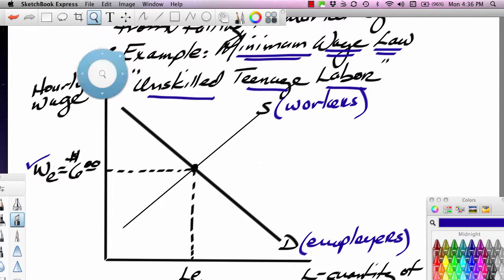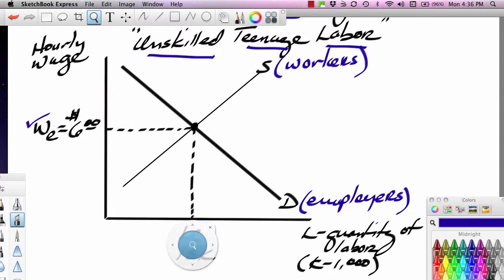Notice that when this market is in equilibrium, the amount of labor supplied equals the amount of labor demanded. So we have what we call an equilibrium condition. This is L sub E, the quantity of labor supplied and the quantity of labor demanded equaling each other, and that would be at 15,000 workers.